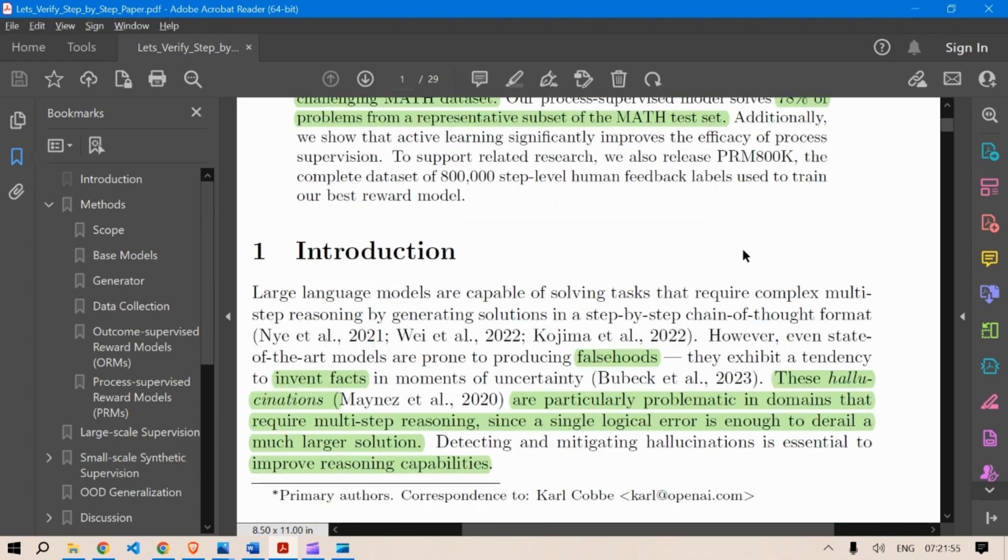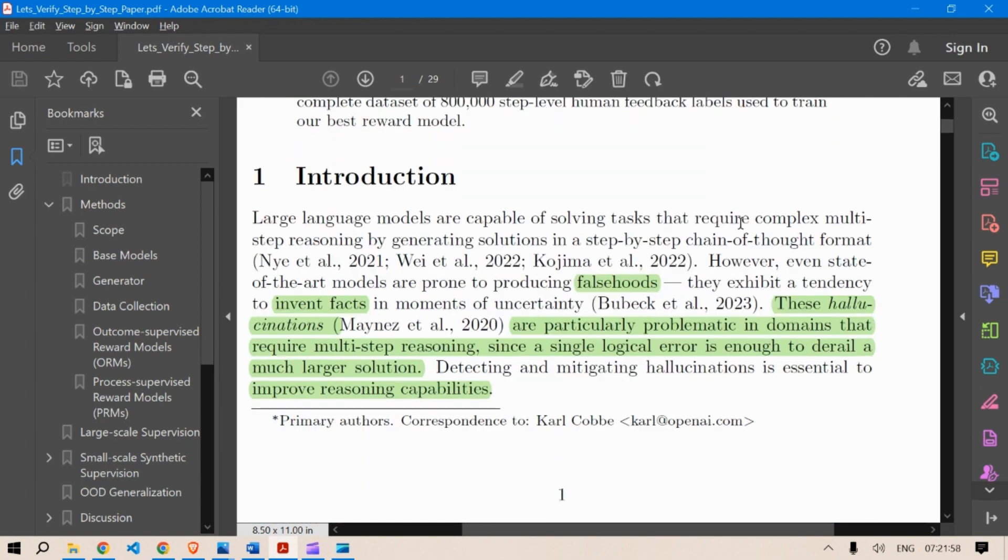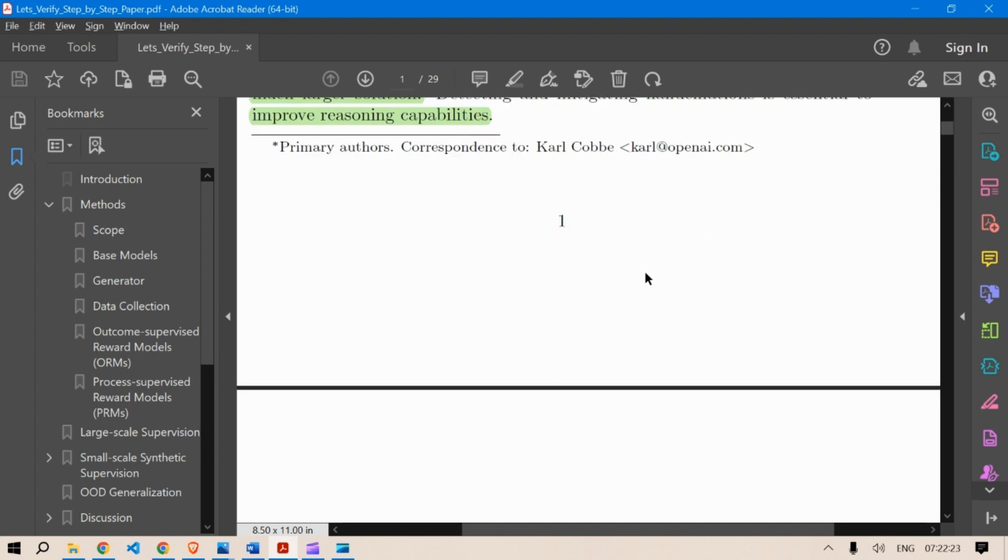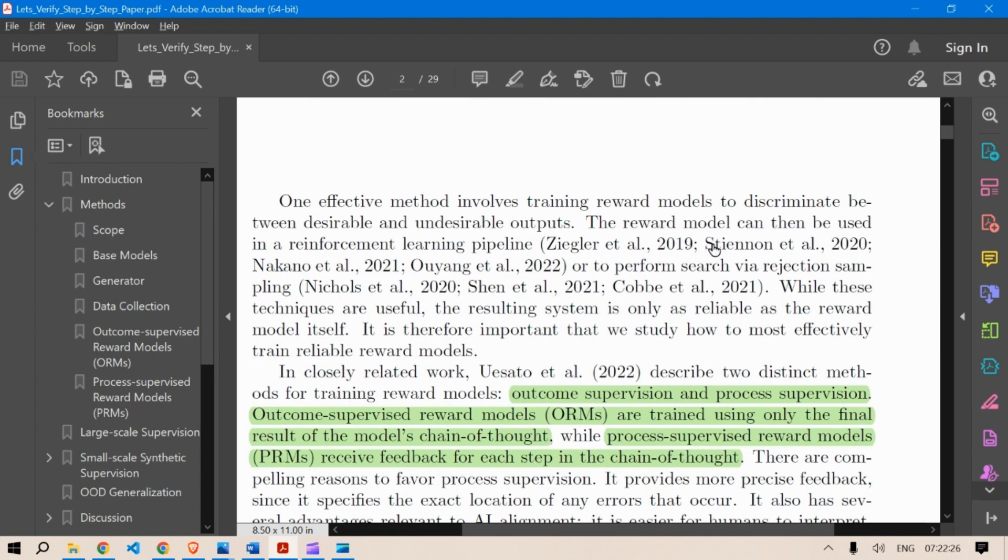Now, we have already seen and we know how ChatGPT produces, they invent facts, they produce falsehood or false results, and they hallucinate. These are particularly problematic in domains that require multi-step reasoning, because a single logical error is enough to derail a much larger solution. That is perfect. We needed this solution, actually, because it's very hectic, and it's very difficult to get any math results correct in ChatGPT.